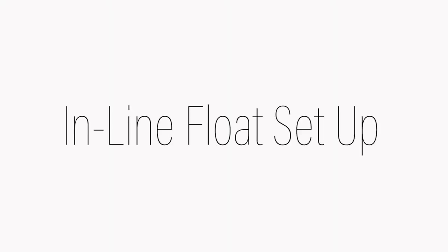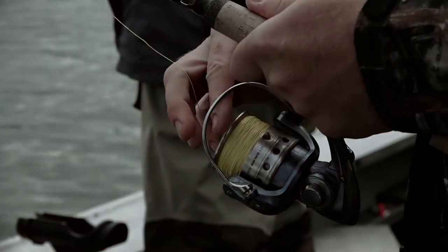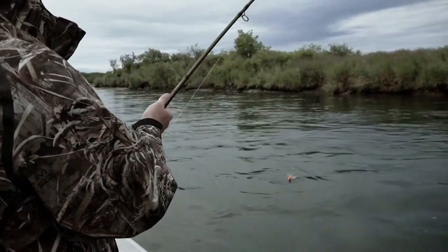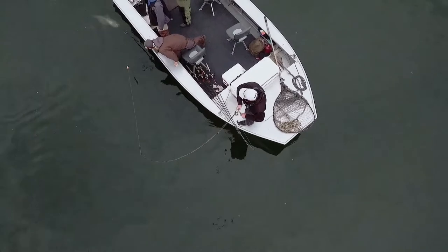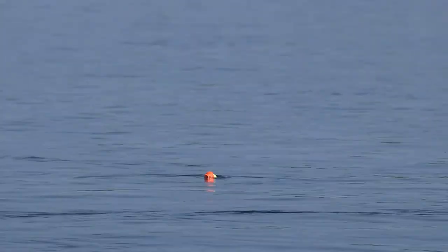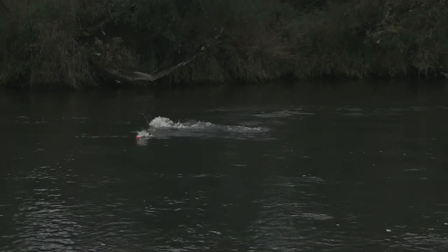Our first and arguably favorite method to target Togiak kings is the classic inline float setup. Traditionally fished in slow or swirly currents and back eddies, this is an extremely effective method that is guaranteed to bring out the inner four-year-old in anglers of any age. Traditionally a large bait of cured salmon roe, either in sack or skein, would be the bait of choice. And while extremely effective, kings fresh out of the salt have a tendency to take the baits deep. When practicing catch and release, a quick hook set where artificial egg patterns are often required. Regardless, rigging is the same. Let's check it out.